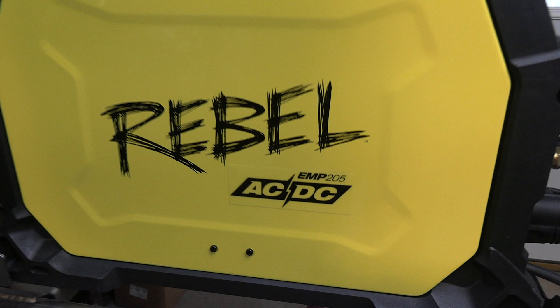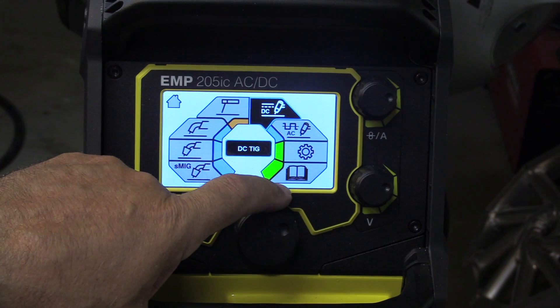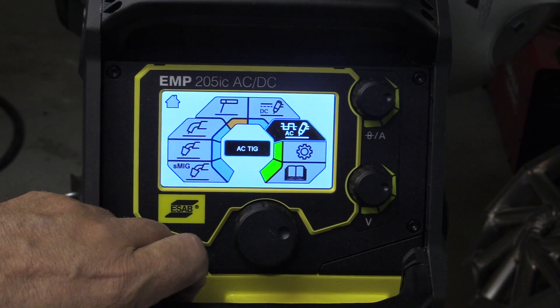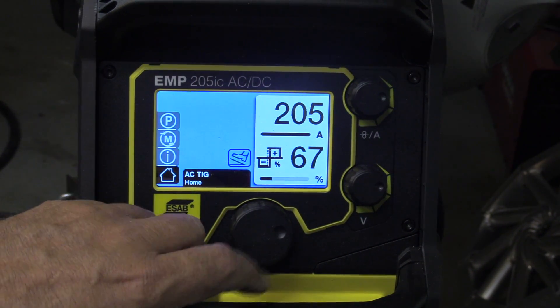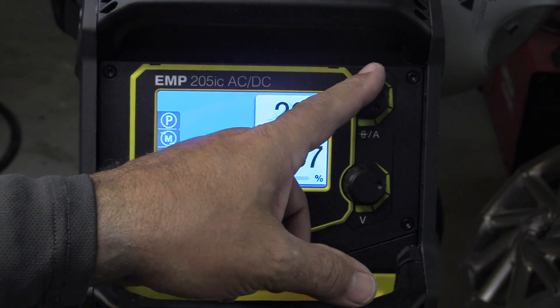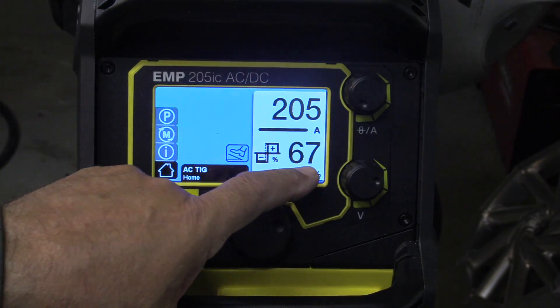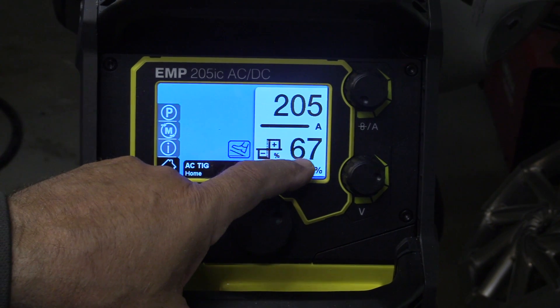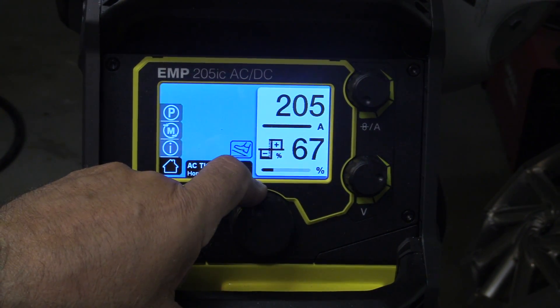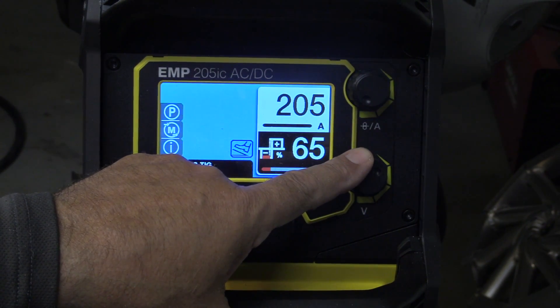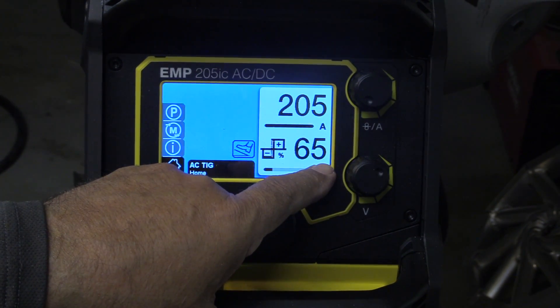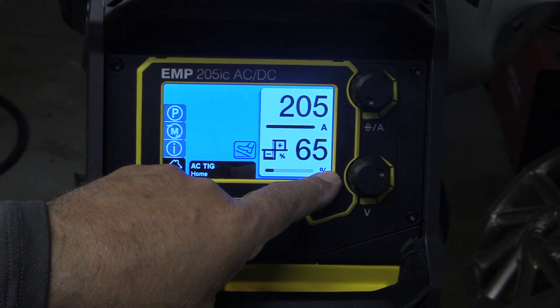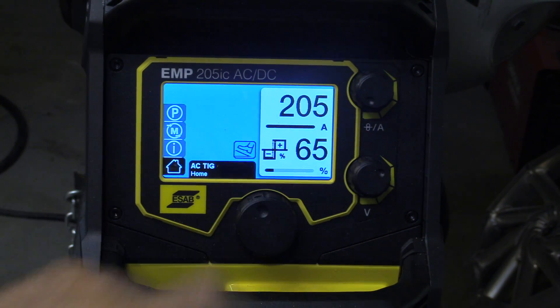I'm using the ESAB Rebel 205 today, the AC-DC model that does AC-TIG aluminum. I'm going to be pushing this thing hard today. I'm maxed out at 205 amps. I'm not getting in deep into the advanced settings like amplitude or anything like that. I'm going to bump my AC cleaning down to 65. That's a little lower than I normally go, but again, I'm shooting for porosity-free weld here. I'm going to be full pedal for a whole lot of this repair.